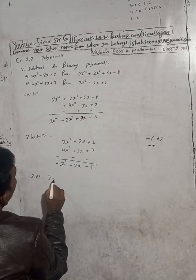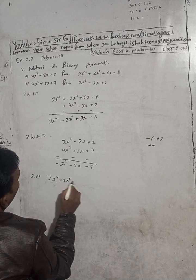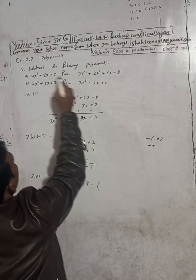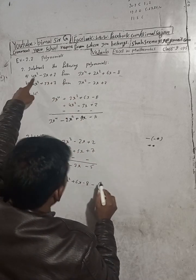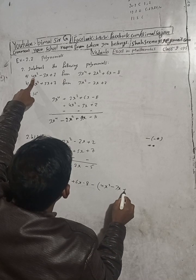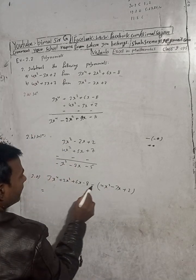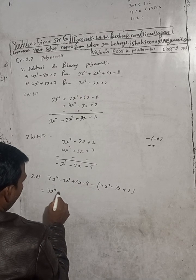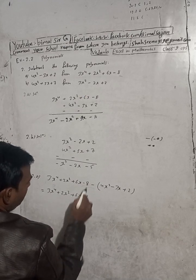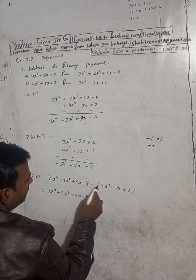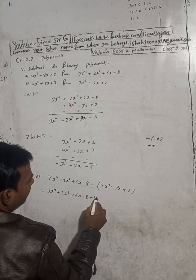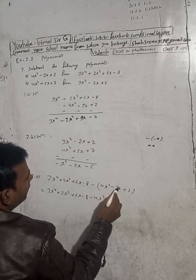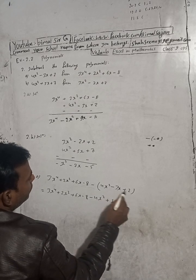Recapping: from 3x to the power 4 plus 2x squared plus 6x minus 8, subtracting 4x squared minus 3x plus 2, we applied sign changes through all terms, giving us our final simplified polynomial answer for this exercise.